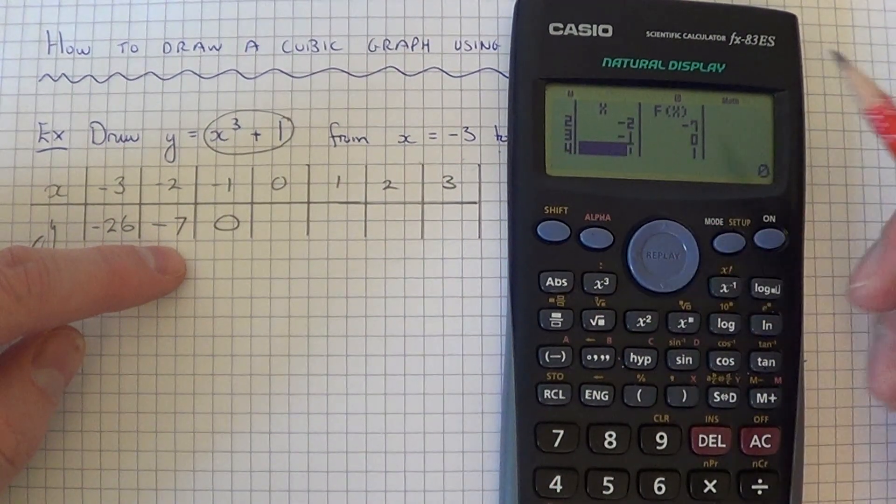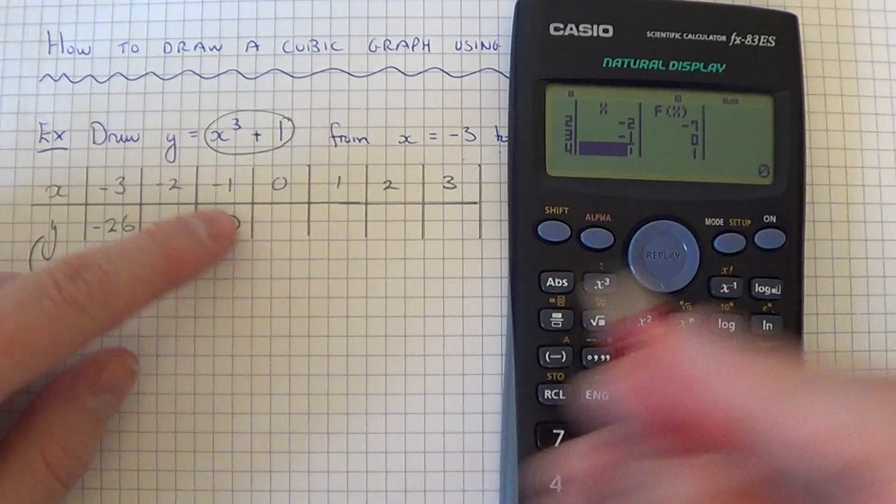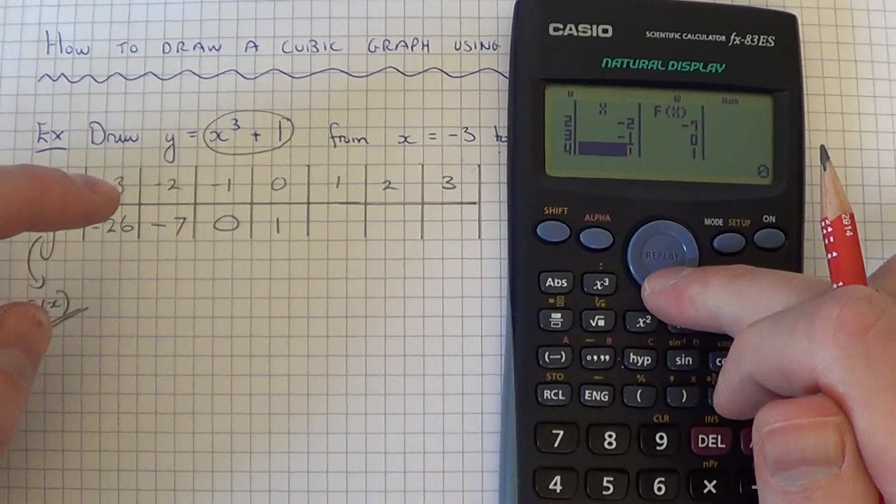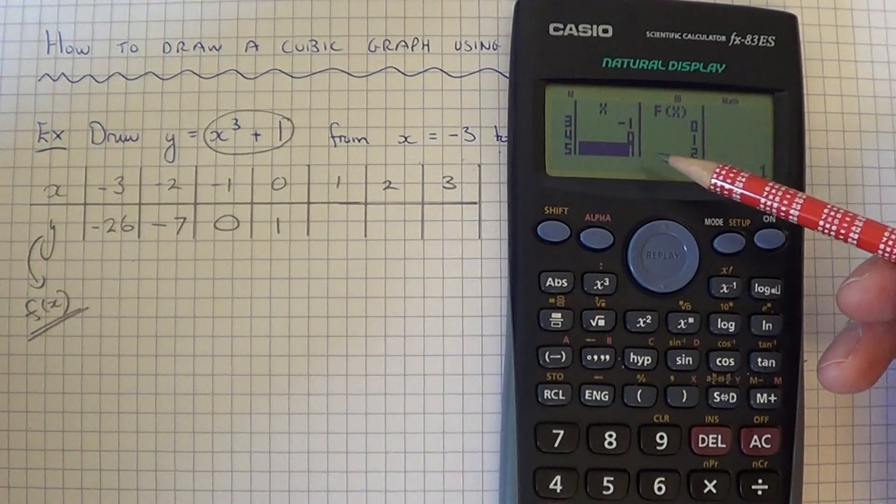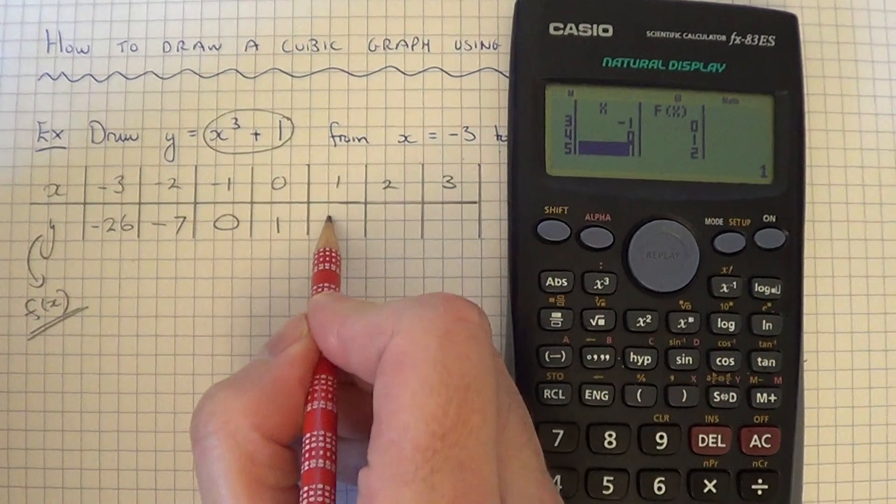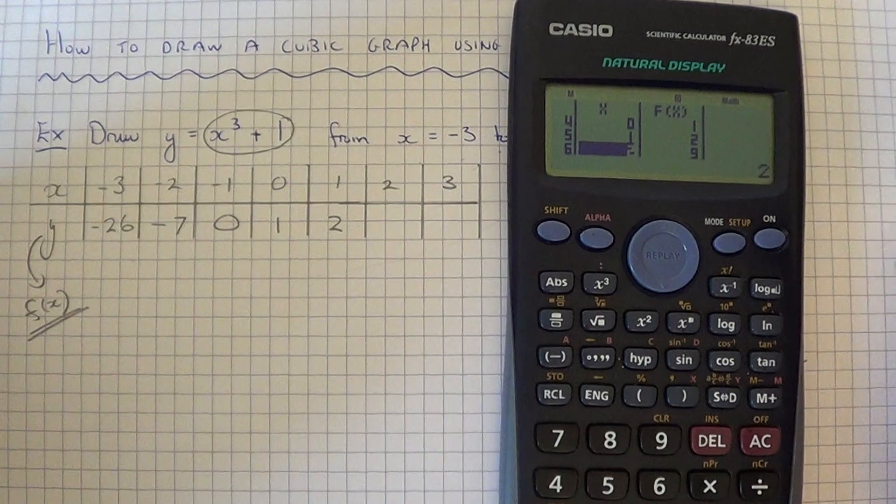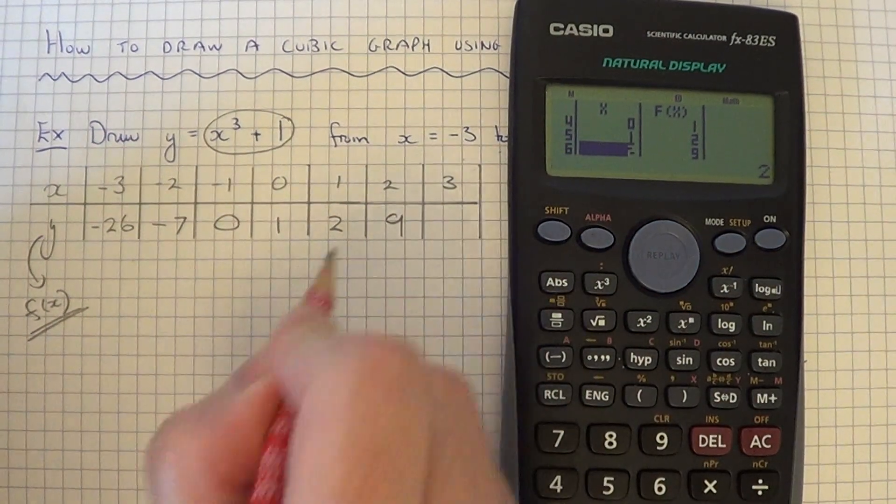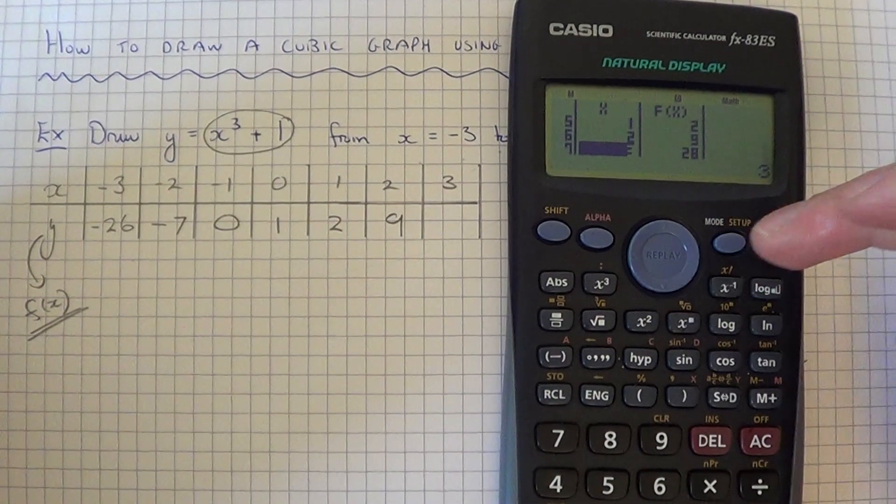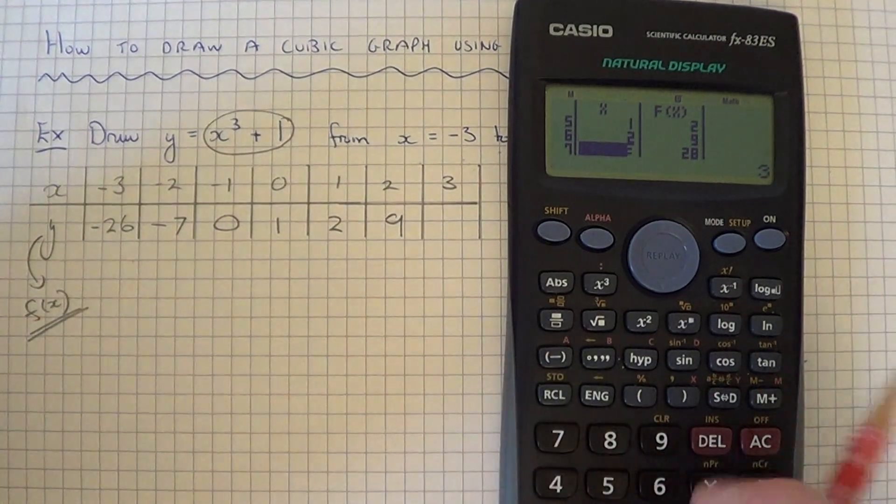I've just scrolled down and got the others. At 0, the y-coordinate is 1. At 1, the y-coordinate is 2. At 2, the y-coordinate is 9. And at 3, the y-coordinate is 28.